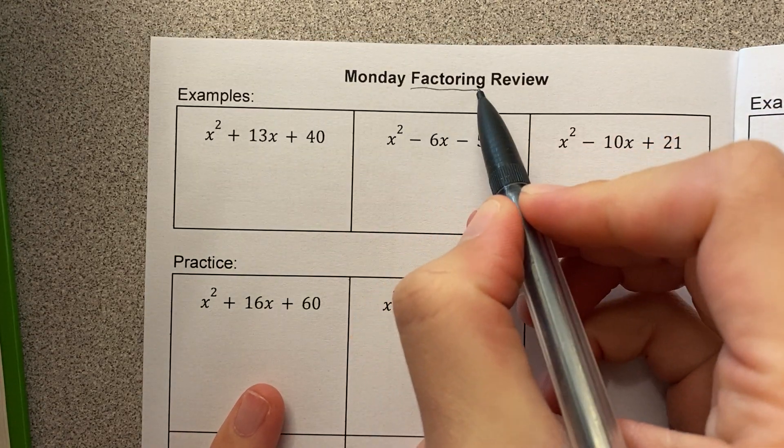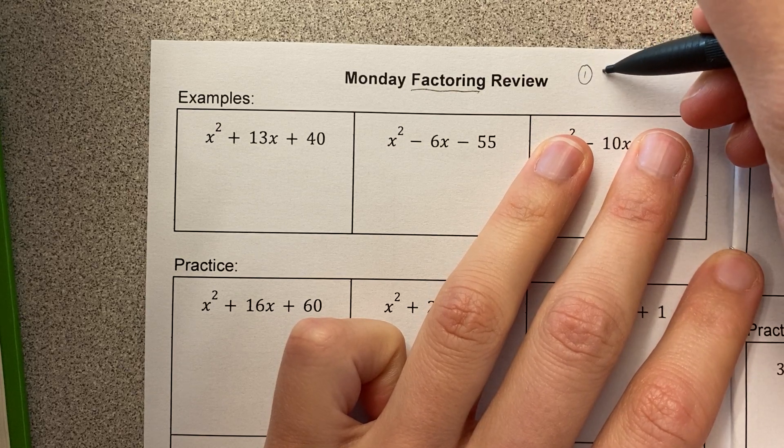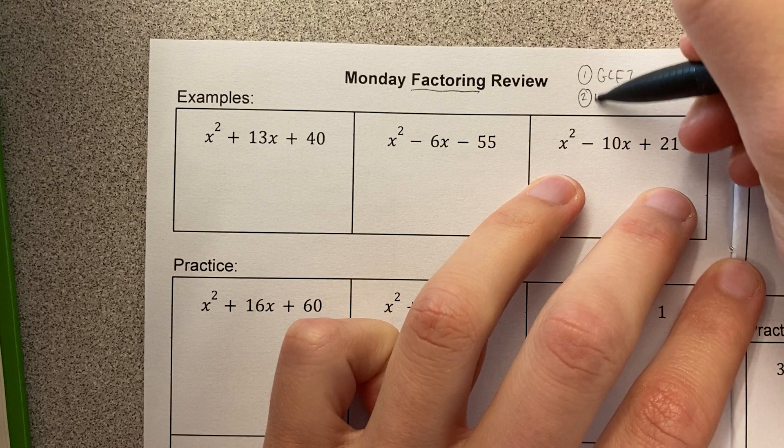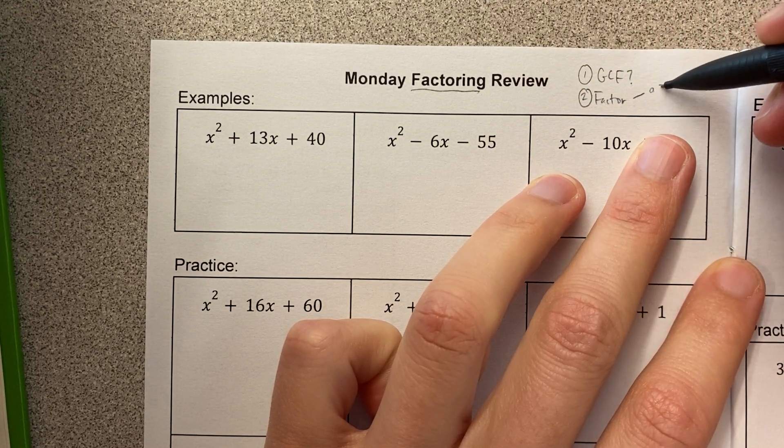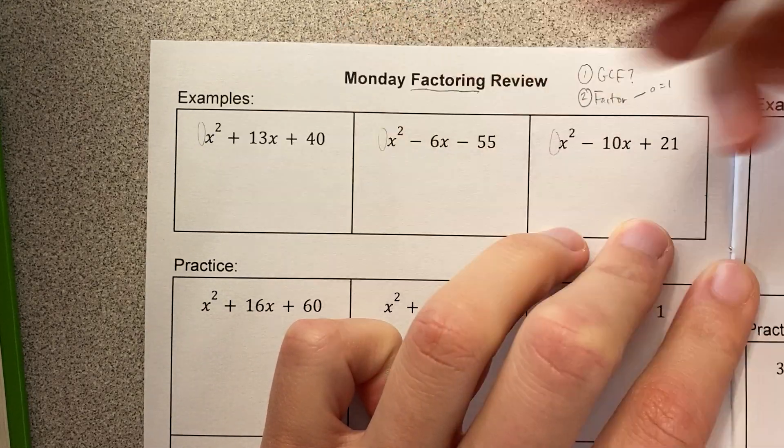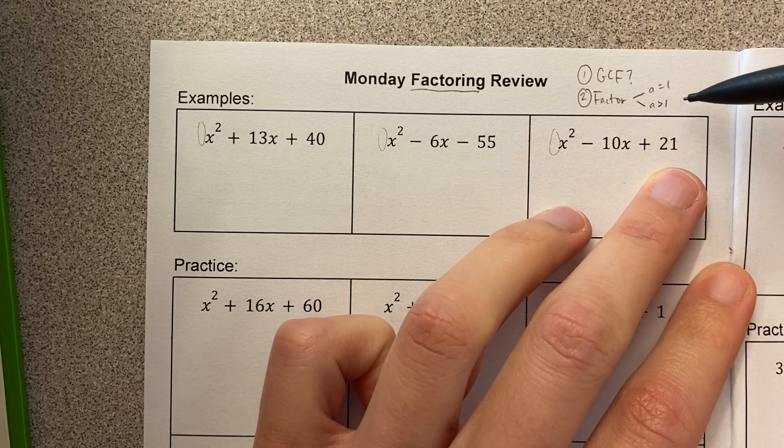All right, so we are factoring. Remember when we factor, we always ask ourselves first, is there a GCF? And then after that, I can continue into factoring. What I always look for when I'm factoring is, does A equal 1? Does this number out in front of x² equal 1? Or if A equals more than 1, then we have a different process.